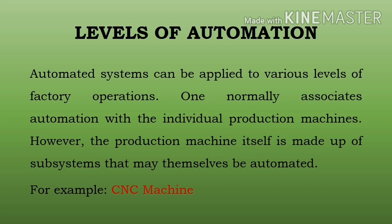Pehla positioning system level mein jo mera automated part handling system hai aur jo machine tool ka combination hai, yeh kya dikha raha hai ki position mera kahan par, machine mera kahan par, kis tarah se attach hai. Second jo level mera hai machine tool level — ismein yeh bata raha hai ki machine tool jo kaam karega uske liye programming kya diya gaya hai, usmein part program kya diya gaya hai, kaise kaam karega. Aur teesra level manufacturing system level — jo mera part program run karega, run karne ke baad vo kya produce karega.